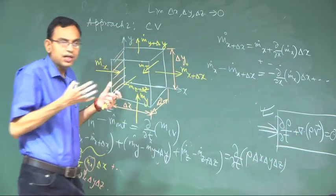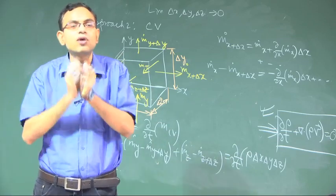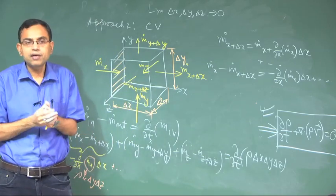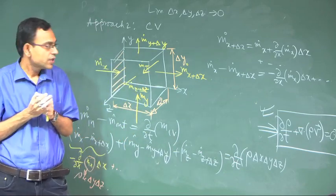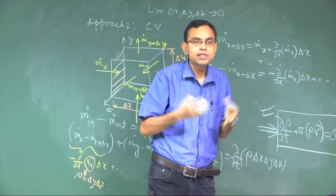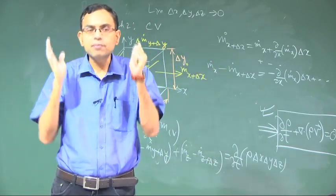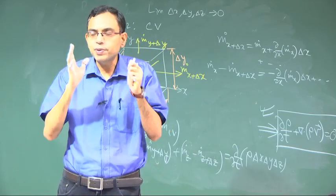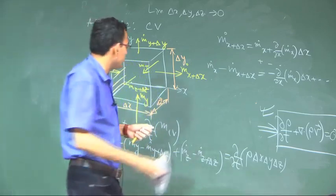The same equation has been derived from both the control mass and the control volume approach. The next concept with which we will wind up today is the most important concept: what is special about incompressible flow? We have a notion — a mental block or prejudice — that incompressible flow means density equal to constant. Let us look into that more carefully.